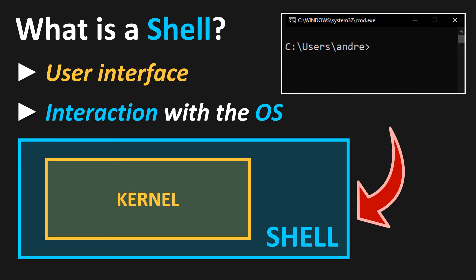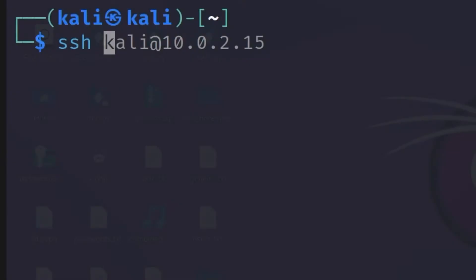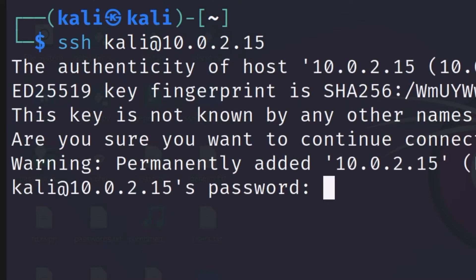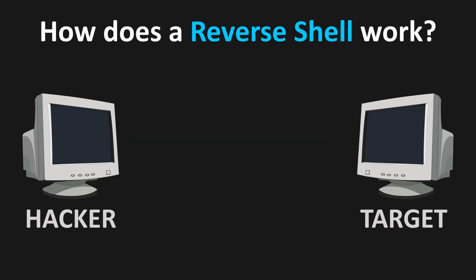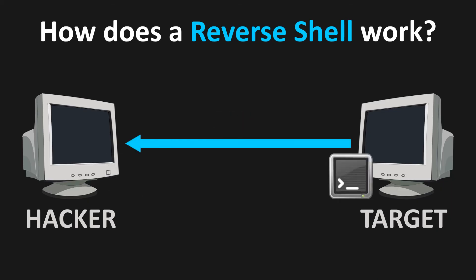But what is a reverse shell? If you want to connect to a server or your Raspberry Pi, the connection request usually comes from you — you can use the SSH protocol, entering a username and the IP address of the device you want to connect to. You will then be asked for a password, and if you enter it correctly, you can operate the device via a shell. With the reverse shell, you do exactly the opposite: instead of you connecting to the target, the target connects to you and offers you a shell.